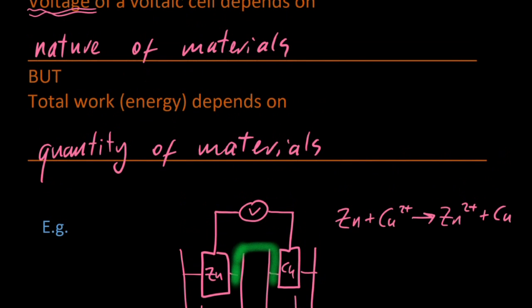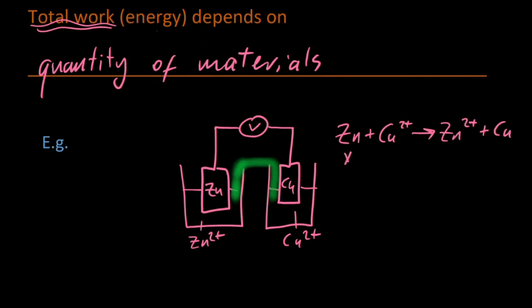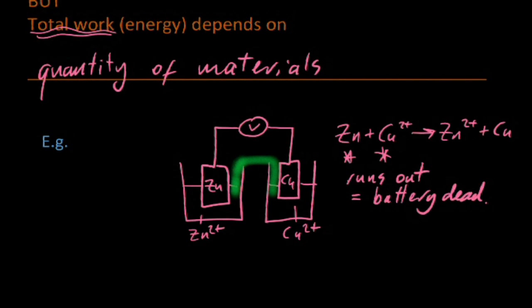But how much energy you can get out of that cell depends on how much zinc and copper you've got. In fact, the battery will stop working when either the zinc runs out or the copper two plus ions run out. So that limits how much energy you can get from it.